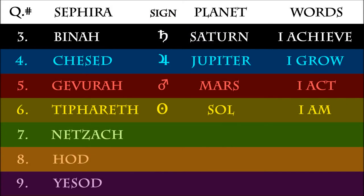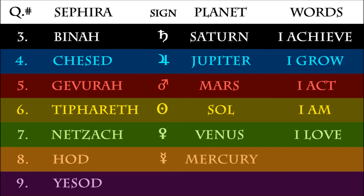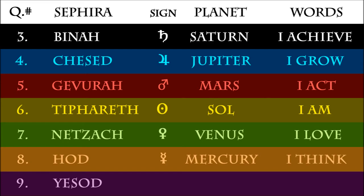Next up we've got Venus. What do you think she says? I love. Then we've got Mercury — orange is Mercury's color. Mercury says: I communicate. And finally we've got Luna, purple — the moon. She says: I feel. That refers to the fact that emotions are on one pillar, thoughts are on the other — form versus force.